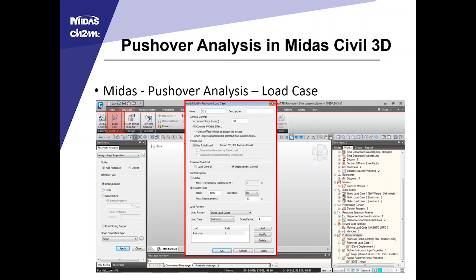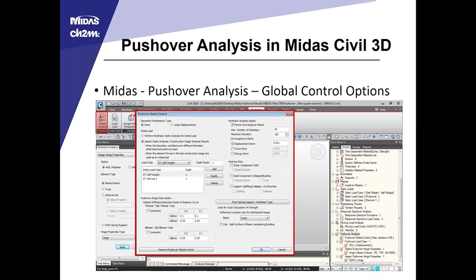Next, set up a load case and give it a name. Choose a number of steps — in all my cases, I chose 50. I used the initial load and imported the static analysis from the initial model run. The increment method was displacement control, selecting a node and stopping the analysis when that node is moved 12 inches in the transverse direction. For load pattern, a pushover analysis is also applied as a lateral load, applying a unit load to give shear capacities with displacements. The global control option has additional options for convergence tolerances and other parameters where I maintained the defaults.